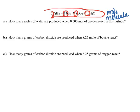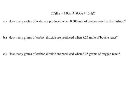Let's start looking at the problem. In part A, it gives me 0.600 moles of oxygen. So I'm going to start off by writing 0.600 mol, and I'm going to be very specific about what I have — I have oxygen. I'm going to find oxygen in my reaction. There it is. I'm going to write it as it appears: O2.